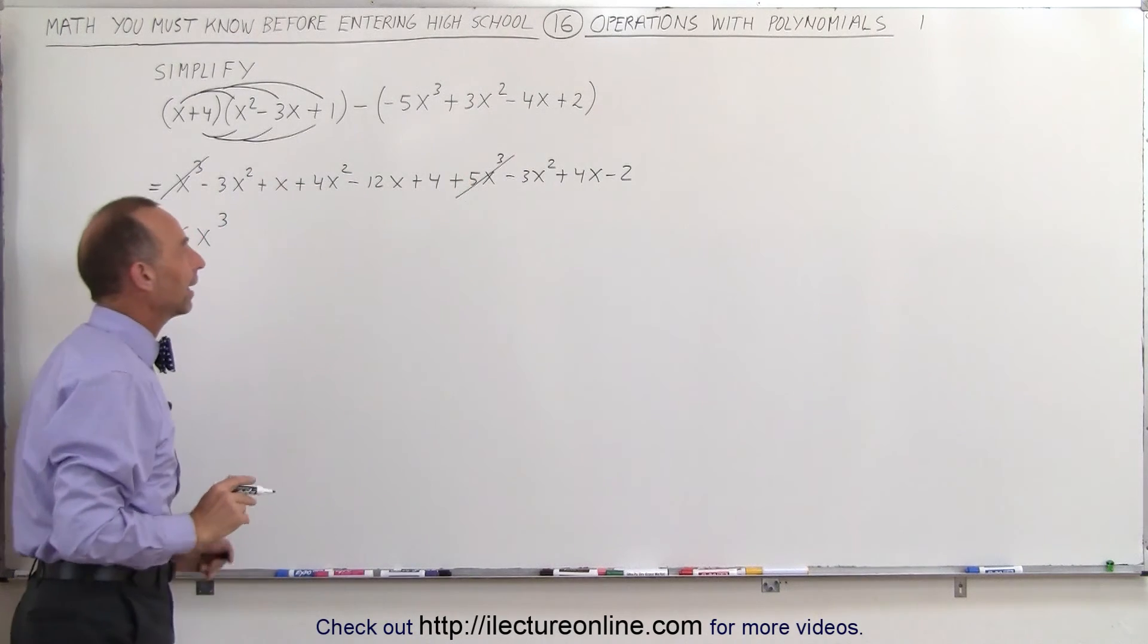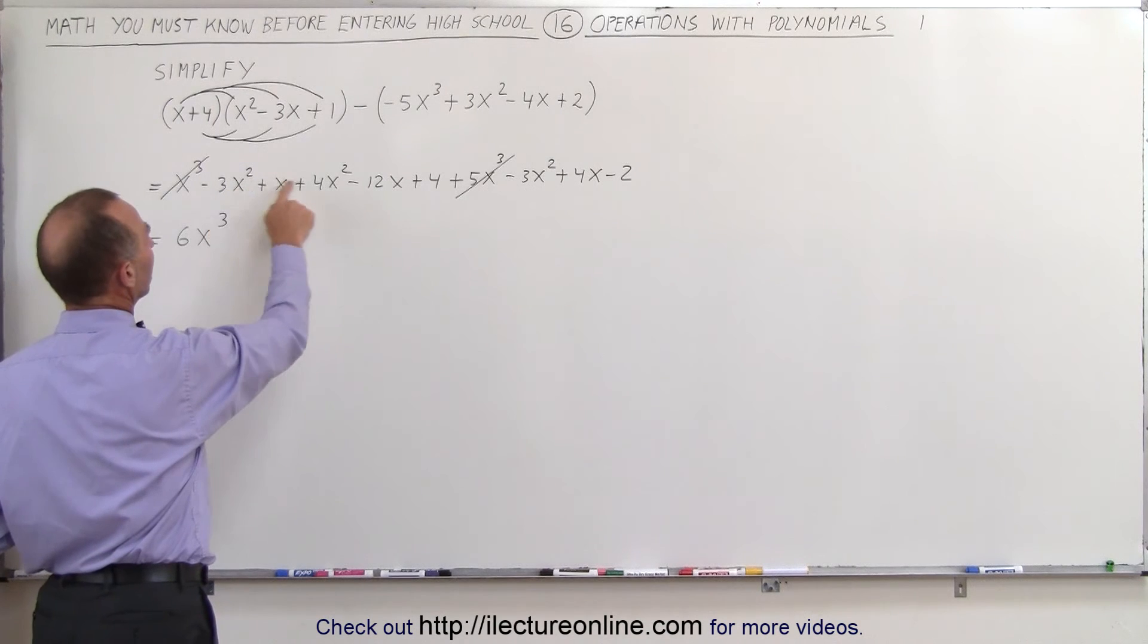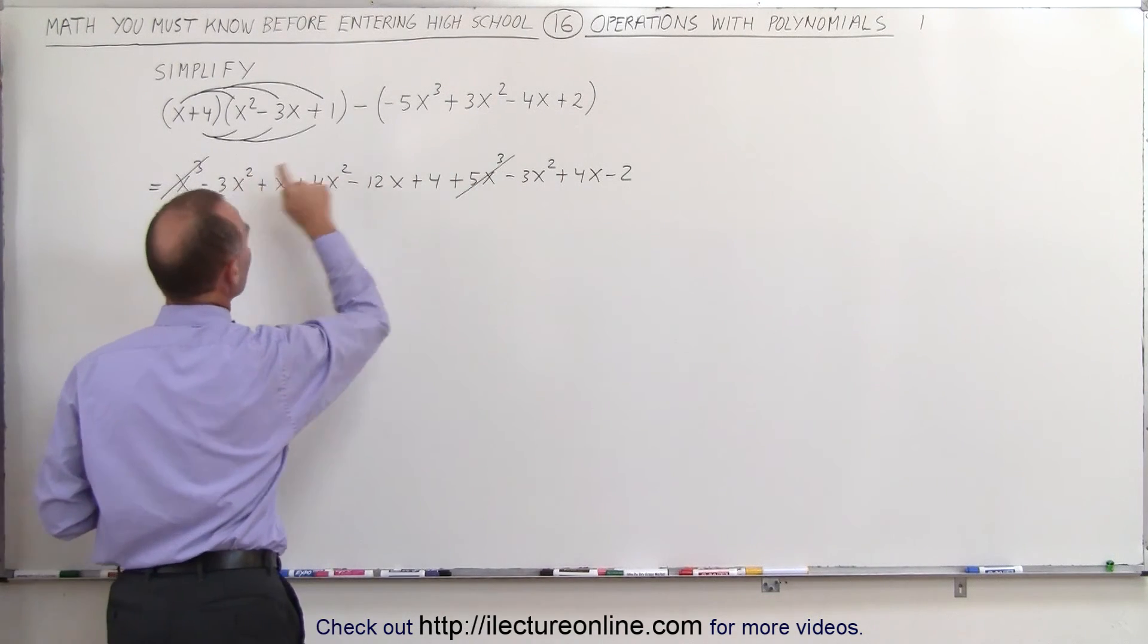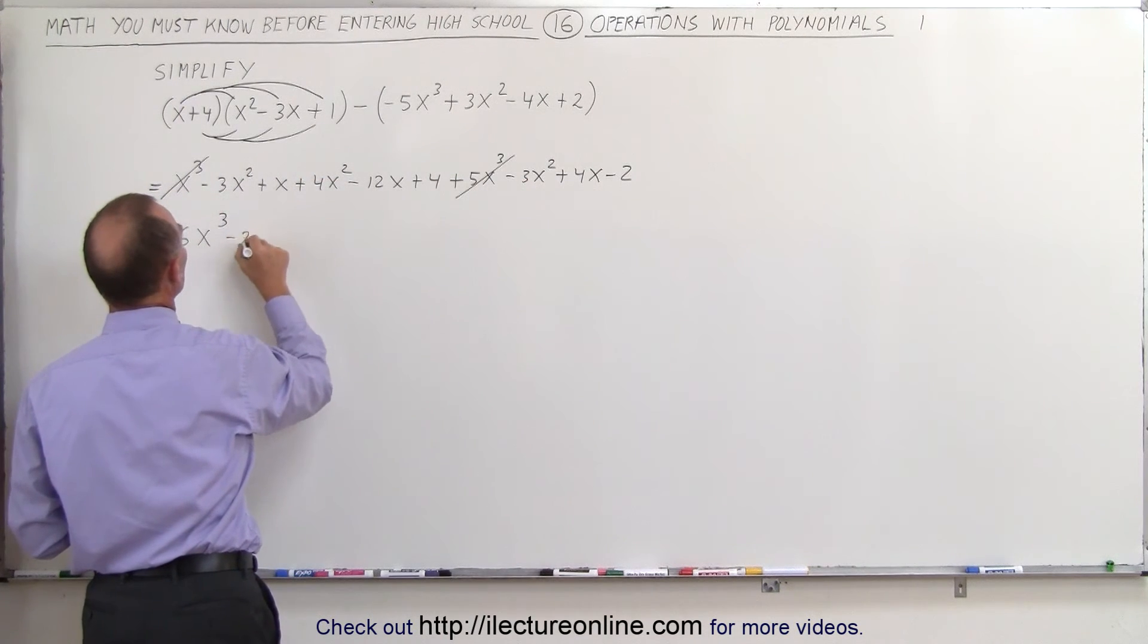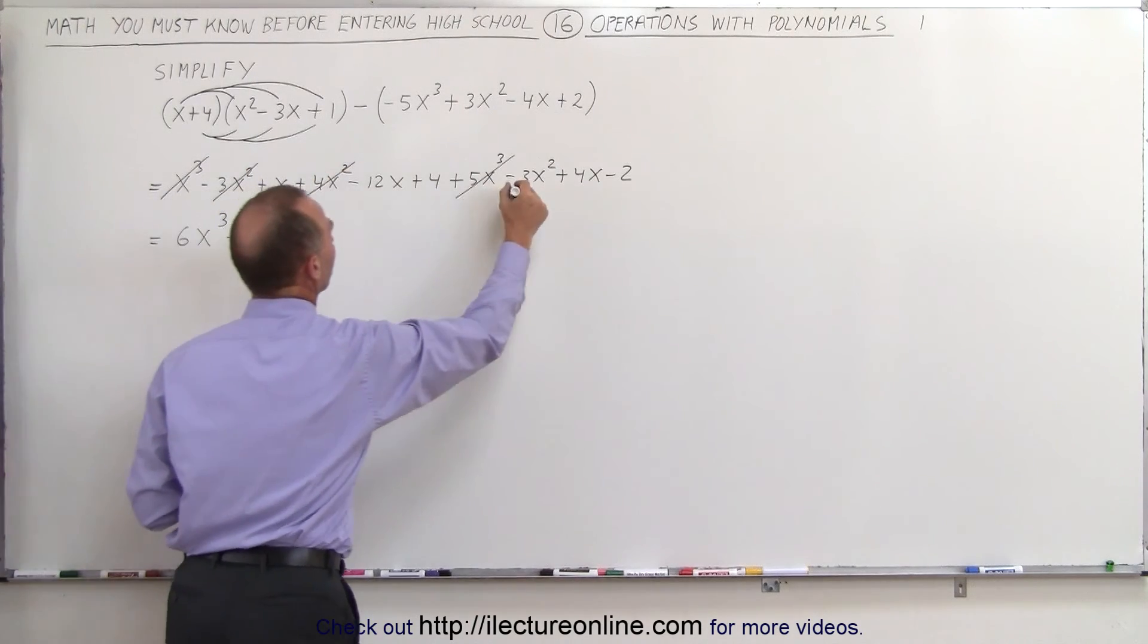Next, we need to collect all the x squared terms. Minus 3x squared plus 4x squared and minus 3x squared. So minus 3 minus 3 is minus 6, plus 4 gives us a minus 2x squared. We cross out the terms we've already accounted for.